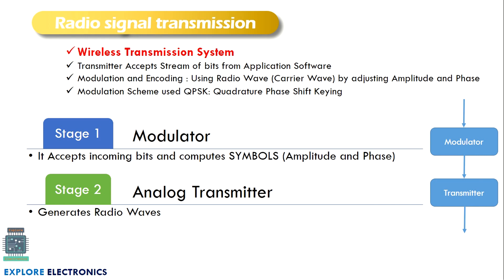In radio signal transmission, a wireless transmission system uses radio signals. The transmitter accepts a stream of bits as input, obtained from the application software. Since stream of bits is the input, this is digital communication. Modulation and encoding are the methods adapted for transmitting through a wireless transmission system, happening in two stages: a modulator in the first stage and a transmitter in the next stage. An analog carrier wave in the radio frequency range is used — that's why it is called radio signal transmission.